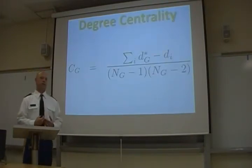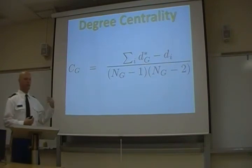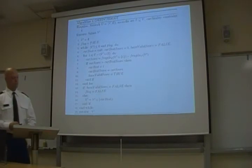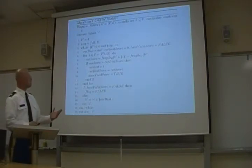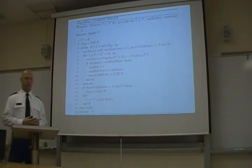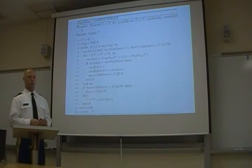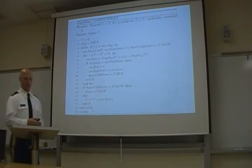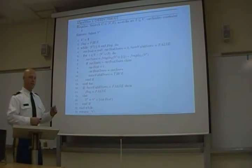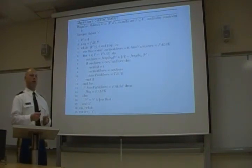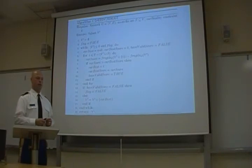In our research, we use degree centrality to determine the star-likeness of the network. We also provide an algorithm that determines which individuals we should target in a shaping operation to make the network more star-like, thus more susceptible to a future leadership strike. Key to this idea is the fact that we're using a characteristic of the network rather than a characteristic of an individual node to determine how to shape the network.